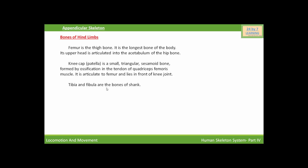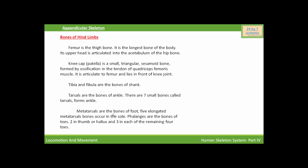Tibia and fibula are the bones of the shank. Tarsals are the bones of the ankle — there are seven small bones called tarsals that form the ankle. Metatarsals are the bones of the foot; five elongated metatarsal bones occur in the sole. Phalanges are the bones of the toes — two phalanges are found in the big toe and three phalanges are found in each of the remaining four toes.